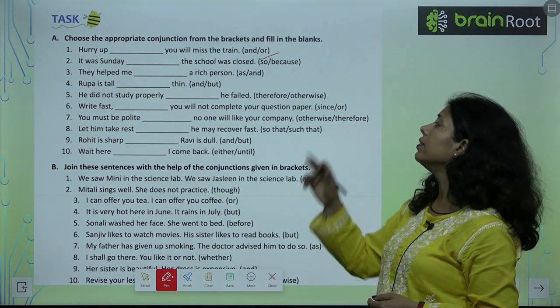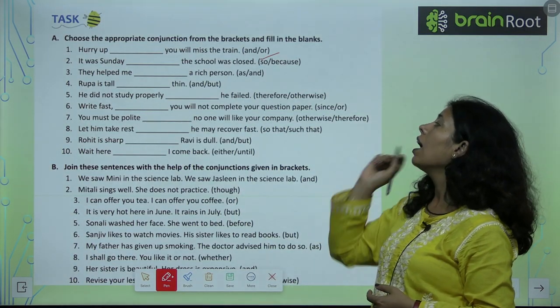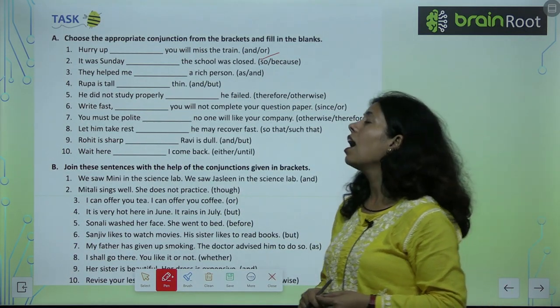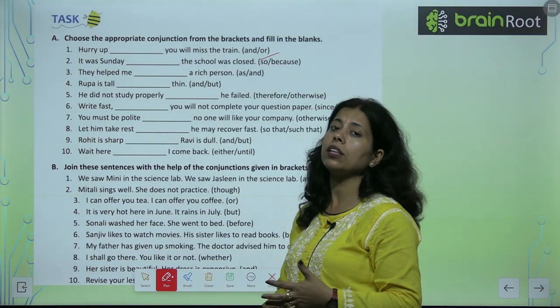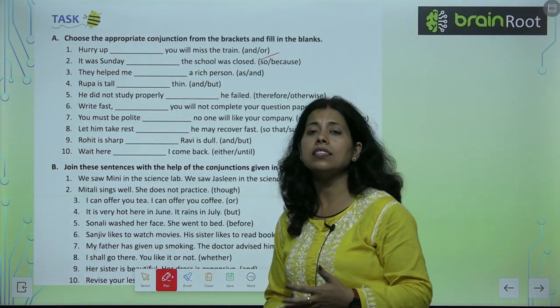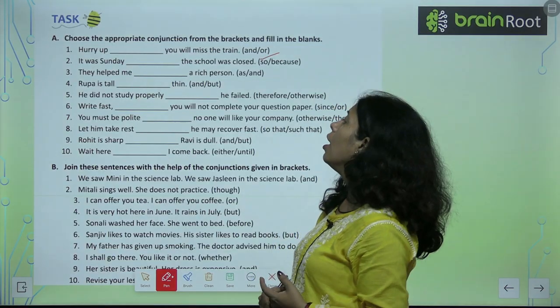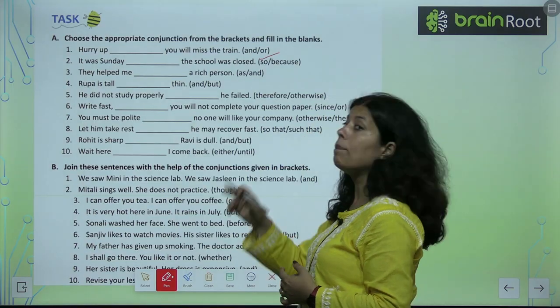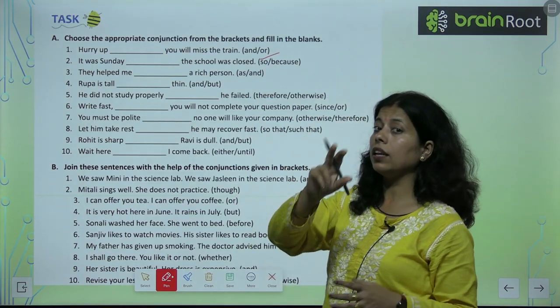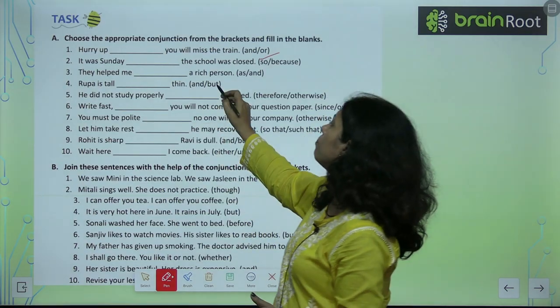They helped me as a rich person — unhone meri madad kari, jaise ek ameer aadmi ki tarah. Rupa is tall but thin — opposite mein baat ho rahi hai, so 'but' is used.